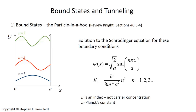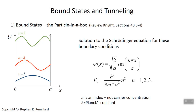We'll briefly go over a couple of topics from modern physics. The first is the bound state problem — the particle in a box — where you have a particle such as an electron confined in a space. We'll deal with one dimension, from x equals zero to x equals a. The Schrödinger equation, solved with these boundary conditions and potential of zero in that range and infinity everywhere else, gives a sinusoidal solution.